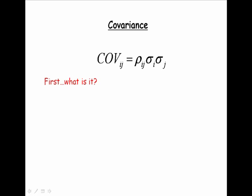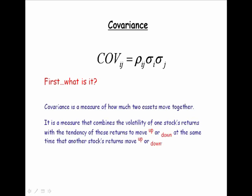Our next formula is the formula for covariance. What is covariance? Covariance is a measure of how two assets move together.